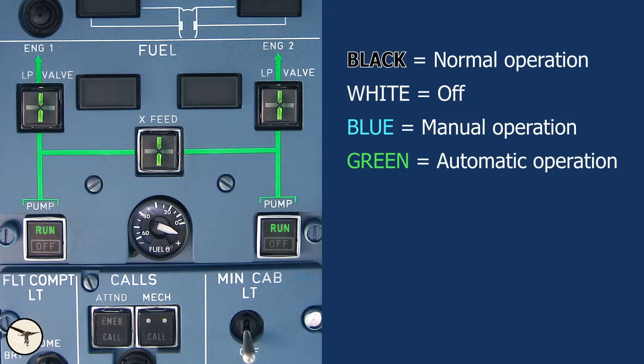Green, the system is selected on and operating automatically. For example, when the fuel pumps are activated, they will run until the engine starts, at which point the engine-driven fuel pump takes over. The electric pump will continue running for 30 more seconds before shutting off. It will restart automatically if the fuel pressure drops below 5 psi, if fuel cross-feed is activated, or if the fuel quantity in the associated tanks falls below 160 kilos.